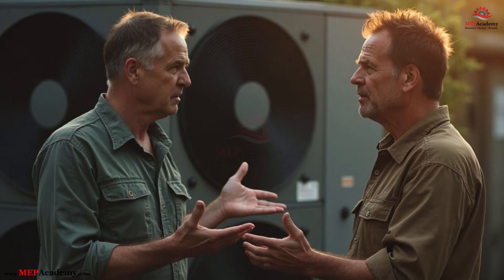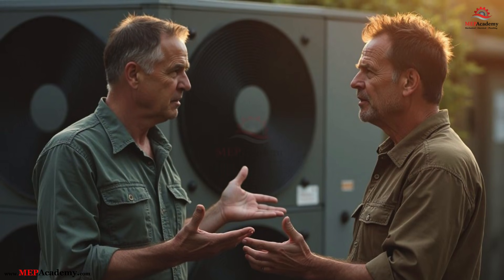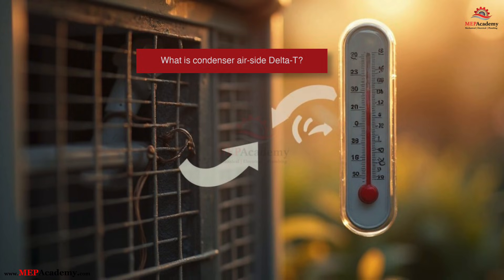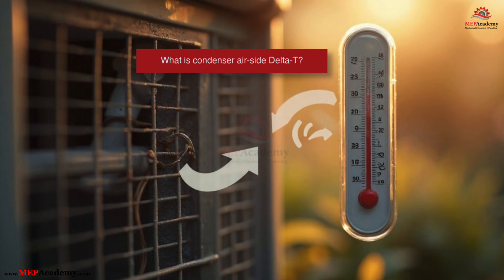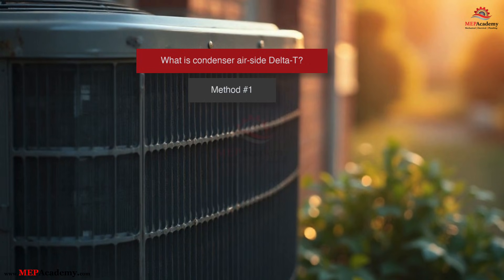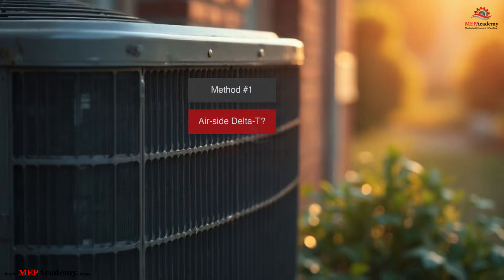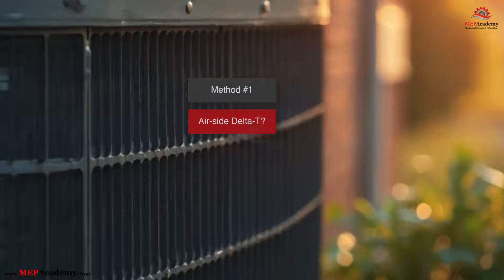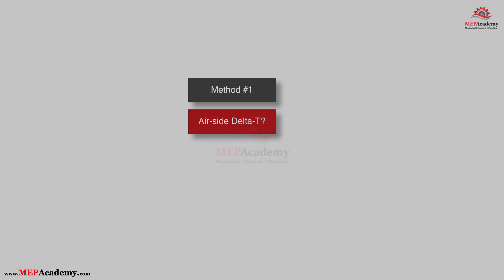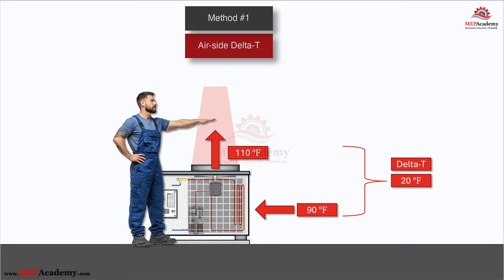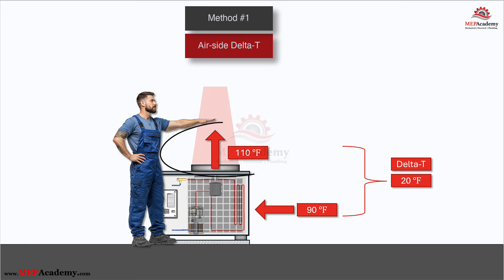Let's define the two numbers everybody argues about. Method number one: airside delta T — the quick and dirty one. Condenser delta T is the temperature difference between the air entering the condenser and the air leaving the top of the condenser as the fan blows it out.